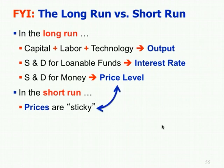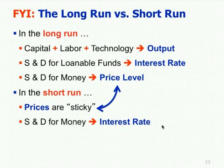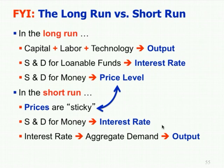So in the short run, the price level is not going to change as much. As supply and demand for money changes, will it be reflected in the price level? Yes, but much less in the short run than it ultimately will in the long run. The supply and demand for money instead influences short run interest rates. In the long run the interest rates will adjust back. In the short run it manifests in the interest rate, which then influences aggregate demand and output — so you can actually influence real output in the short run.